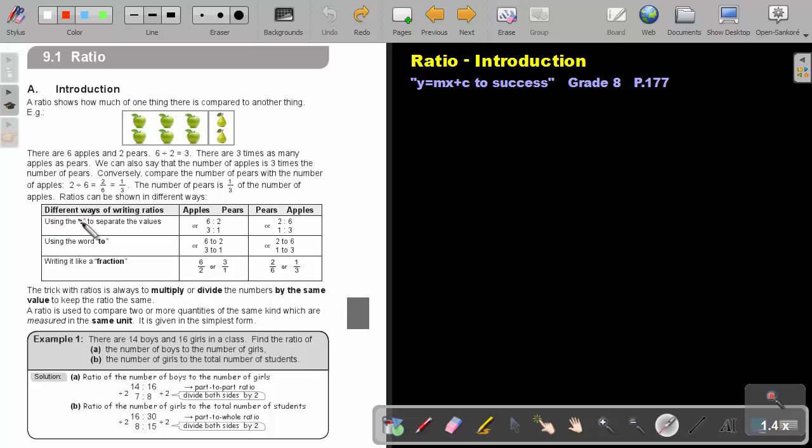Using the double point to separate the values. So apples to pears, it's 6 to 2 and it can be simplified to 3 to 1. But pears to apples is 2 to 6 or it can be simplified to be 1 to 3. Using the word two, you can also say instead of the double point 6 to 2 or 3 to 1, 2 to 6 or 1 to 3.